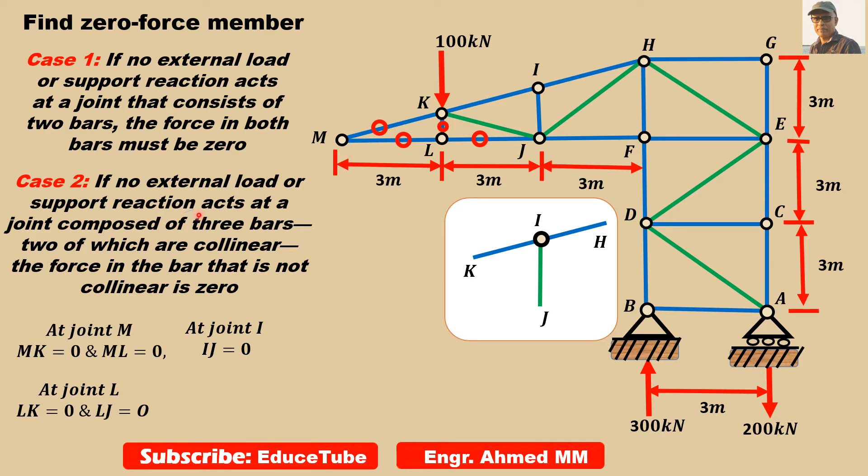What Case 2 says: if no external load or support reactions acts at a joint composed of three bars, two of which are collinear, the force in the bar that is not collinear is zero. There is no external load or support reactions, so this third one which is not collinear will be zero. IJ equals zero.